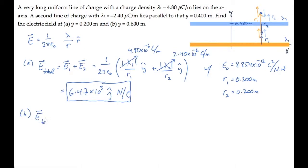The total electric field, then, is E1 plus E2: 1 over 2 pi epsilon naught, lambda 1 over r1 in the positive y direction, lambda 2 over r2 in the negative y direction, where I've taken the absolute value of lambda 2, because we've explicitly included the negative sign.